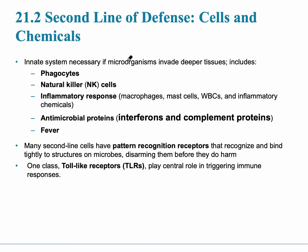The second line of defense consists of innate, nonspecific defenses including phagocytes, natural killer cells (a type of lymphocyte), inflammatory response, antimicrobial proteins, and fever. Toll-like receptors are proteins that play a role in innate immunity by identifying pathogens. Complement is a group of proteins activated by antigen-antibody complexes and some microorganisms directly — this is an example of the adaptive line of defense signaling the innate system's complement to be activated.